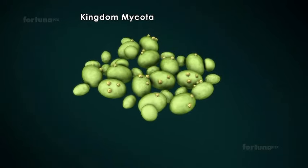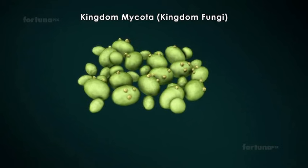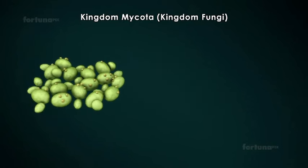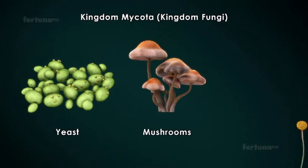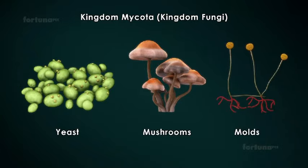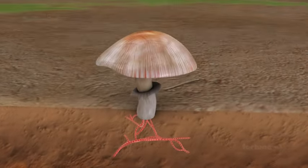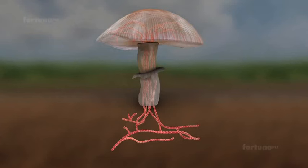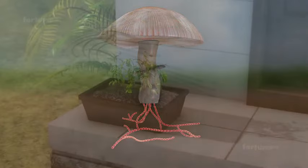Kingdom Mycota, also called Kingdom Fungi, includes fungi such as yeast, mushrooms, and molds. The body of a fungus is made of long, thread-like structures called hyphae. Its members can be free-living, parasitic, or symbiotic.